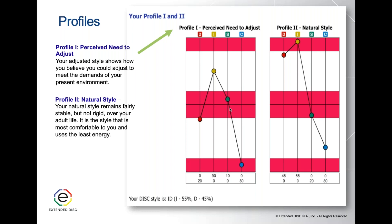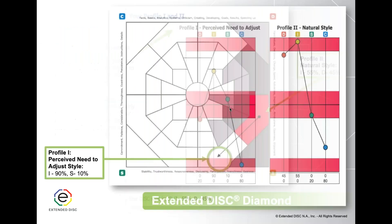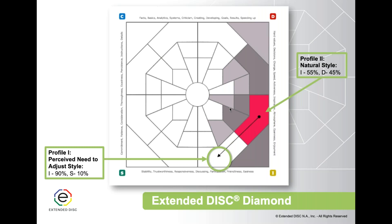Another way to represent a person's profile results is on the Extended DISC diamond. The starting point of the arrow is the location of Profile 2 on the diamond — the coordinates where that profile is mapped. The tip of the arrow is Profile 1, and the arrow shows how significant a change the person perceives they need to make to be successful. In this example, the same person from before is in the I quadrant, and the arrow tip moves away from the D quadrant.